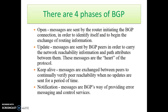There are four phases of BGP. First is Open: messages are sent by the router initiating the BGP connection to identify itself and begin the exchange of routing information. Second is Update: messages are sent by BGP peers to carry network reachability information and path attributes between them — these messages are the heart of the protocol. Third is Keep Alive: messages are exchanged between peers to continually verify peer reachability when no updates are sent for a period of time. Fourth is Notification: messages are BGP's way of providing error messaging and control services.